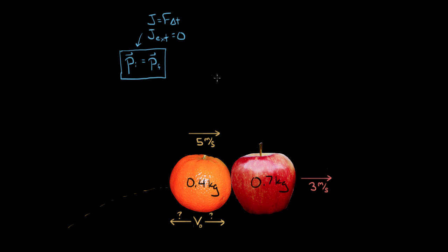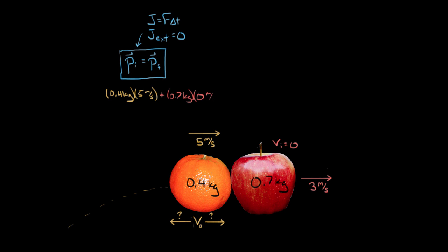So what's this gonna look like? The momentum formula is mass times velocity. The initial momentum of the system: initial momentum of the orange is 0.4 kilograms times the initial velocity of five meters per second, plus the mass of the apple, 0.7 kilograms, multiplied by the initial velocity of the apple. The initial velocity of the apple was zero — it was hanging on a tree branch, just sitting there. That means this entire term is zero, so it goes away.